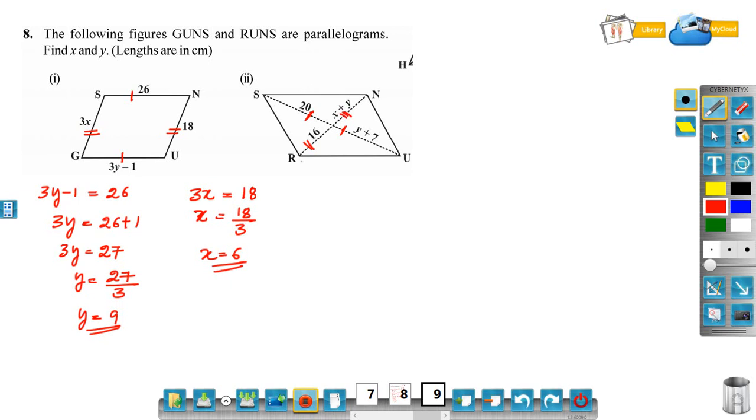We know that diagonals bisect each other, so y plus 7 is equal to 20. Y is equal to 20 minus 7, that is 13. I have written y plus 7 equals 20 because diagonals bisect each other.